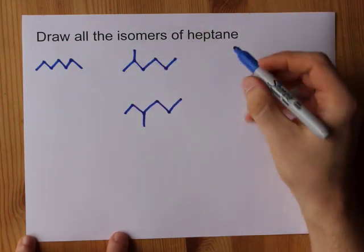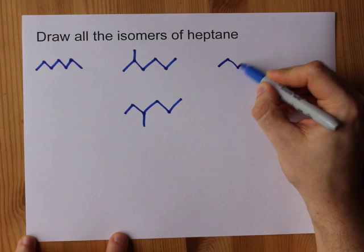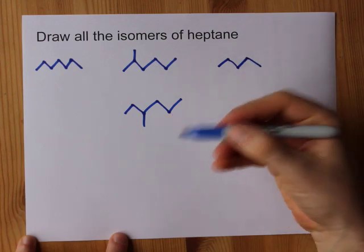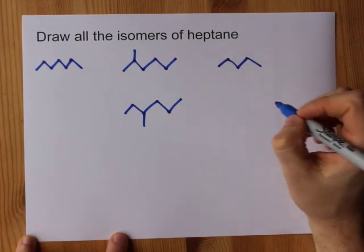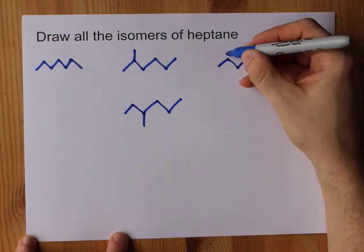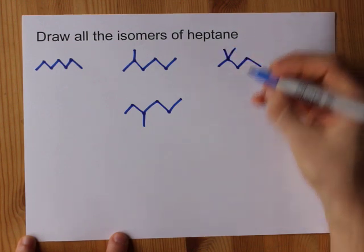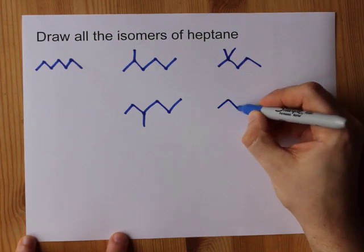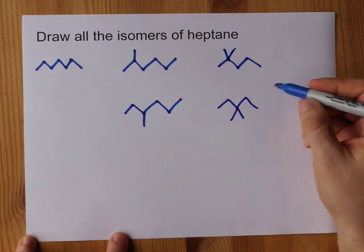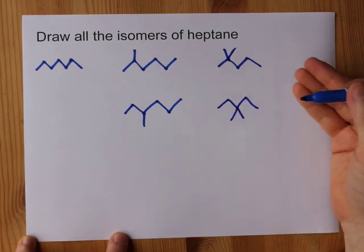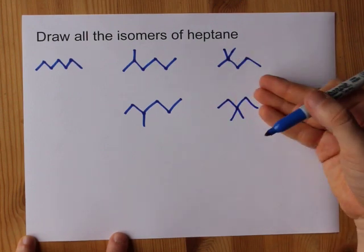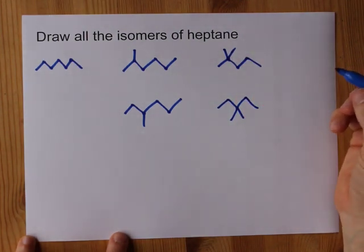Let's cut it down to pentane — things are going to start to get freakier. Now I have two carbons that I get to put wherever I want. I have one option to put them both on carbon 2, and another option to put them both on carbon 3. If I put them both on carbon 4, I'd be back to this molecule — same thing because of symmetry.